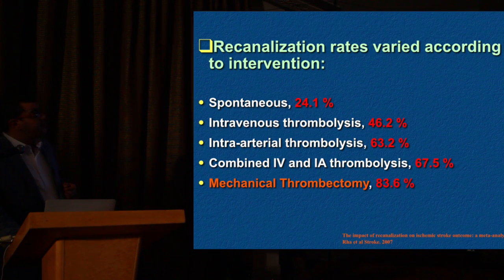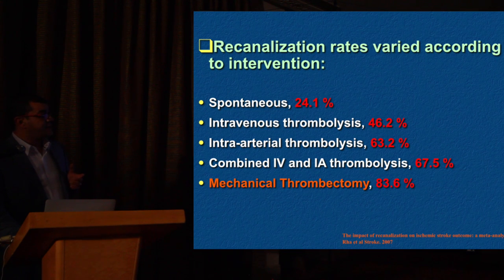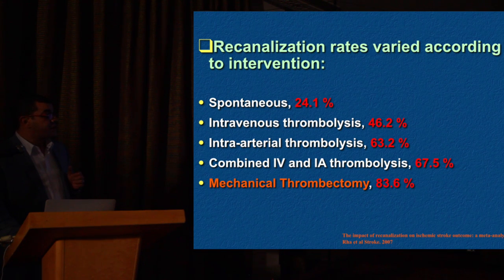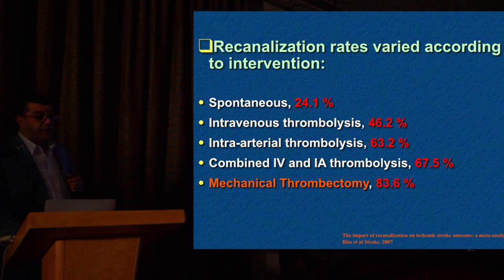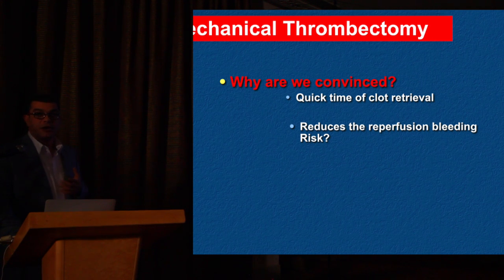Recanalization rate depends on many factors. If left spontaneous, it reaches around 25%. With IV thrombolysis, studies show it can reach around 46%. Intra-arterial thrombolysis reaches 64%, and combined IV plus intra-arterial thrombolysis can reach 67%. But with mechanical thrombectomy, we can achieve 84%. So we are convinced by mechanical thrombectomy, which gives us quick time to retrieve the clot and reduce reperfusion bleeding risk.